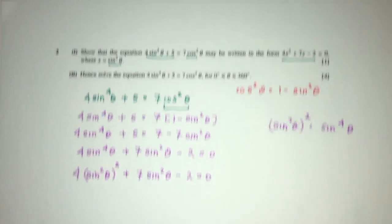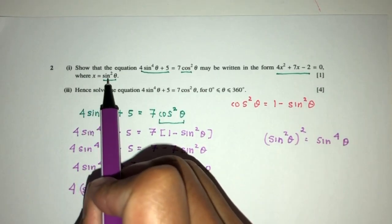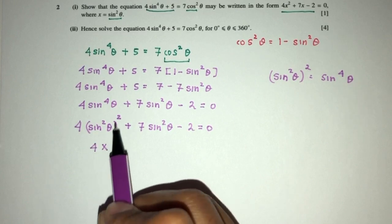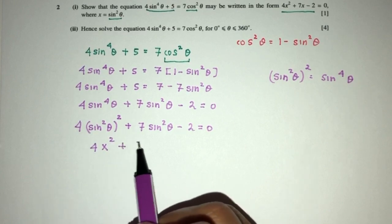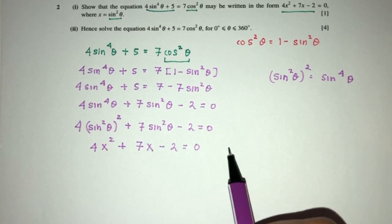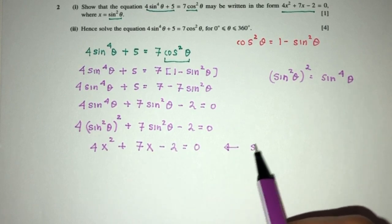Now, going back to the question, we can see here x is equal to this, so we know this has to be 4x² + 7x - 2 = 0. And this will be shown as required.